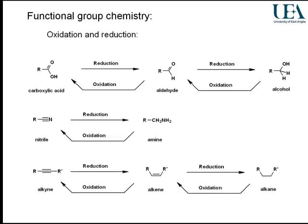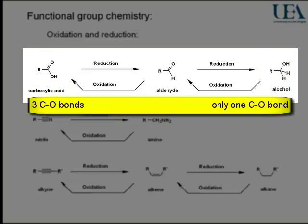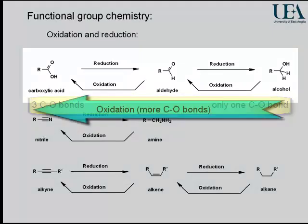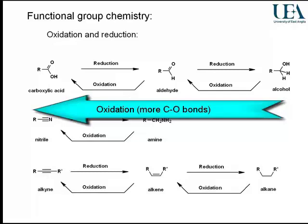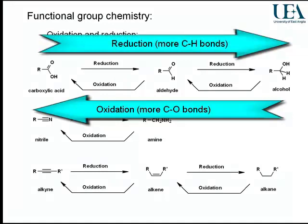The carboxylic acid through to an alcohol — the number of carbon-to-oxygen bonds is changing. The alcohol has fewer carbon-oxygen bonds than a carboxylic acid. So if you want to convert those functional groups from alcohol through to carboxylic acid, you're adding carbon-oxygen bonds — that process is an oxidation. And the reverse direction through that sequence of interconversion is a reduction process.